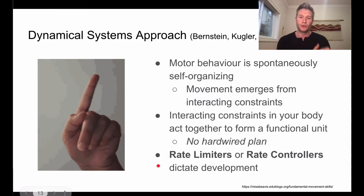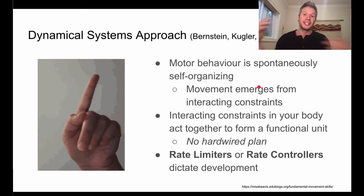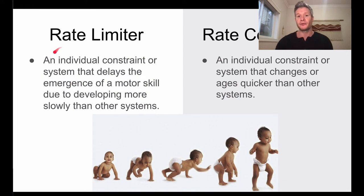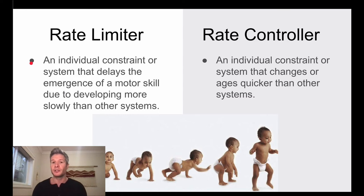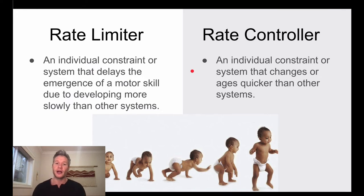Within this, when developing through life, we come across rate limiters and rate controllers, which dictate how we can spontaneously self-organize movements. We don't just come out of the womb and spontaneously walk. A rate limiter is an individual constraint that delays the emergence of a motor skill because something is developing more slowly. A rate controller is an individual constraint or system that changes more quickly as we age — either positively or negatively, helping us develop skills faster or causing us to lose capacity.